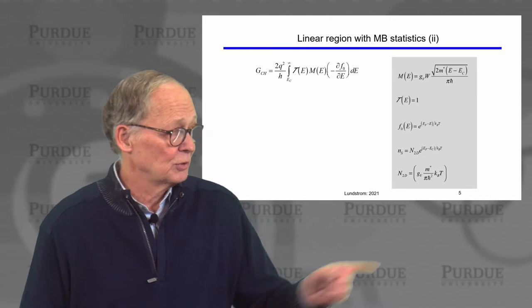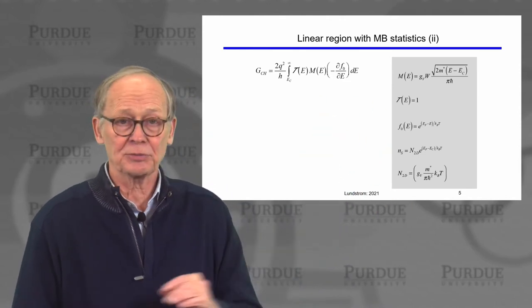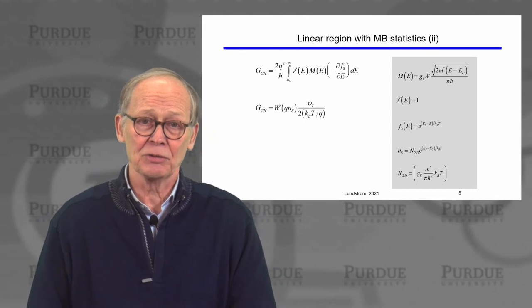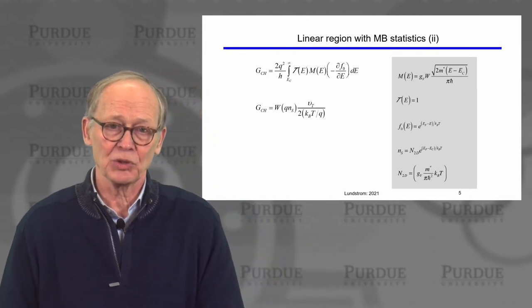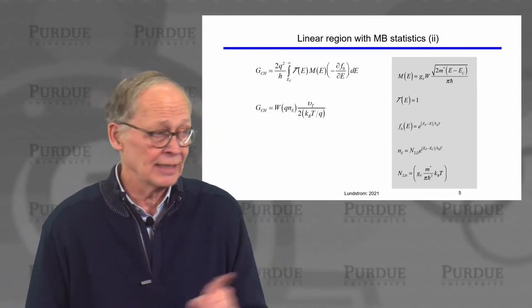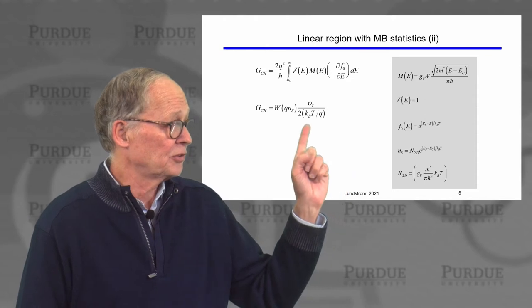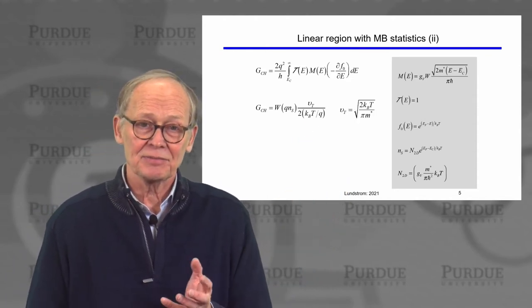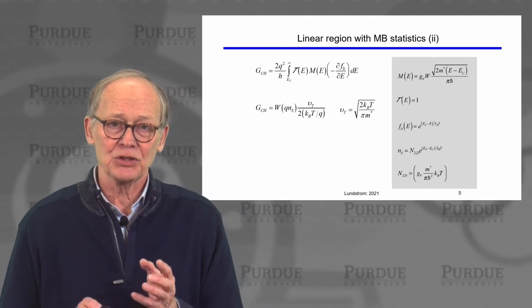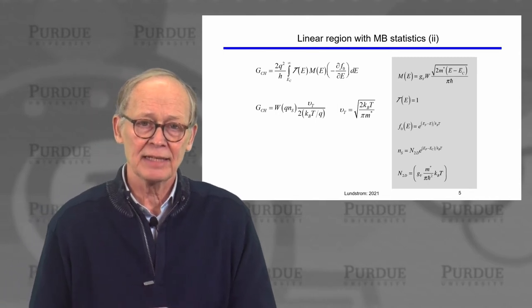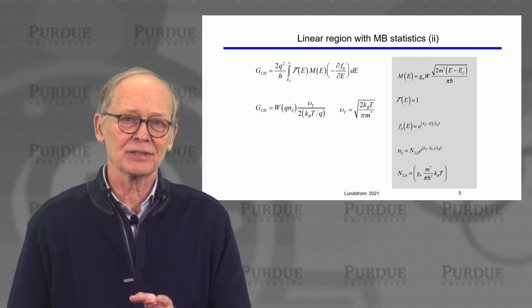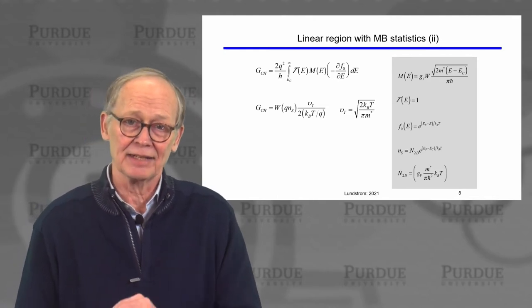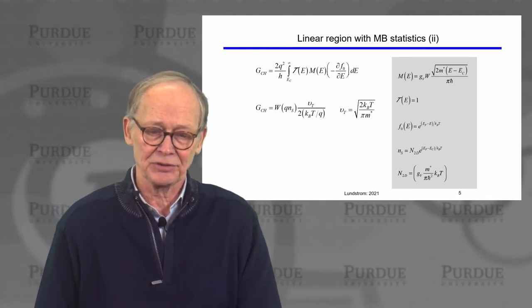We could put all of that into this expression and work out the integral. The reference I just gave works that out for you if you'd like to see it, but this is the result. You'll see that this unidirectional thermal velocity — the one we saw in the previous lecture, which I said we'd see again and would be important — it appears in our result.